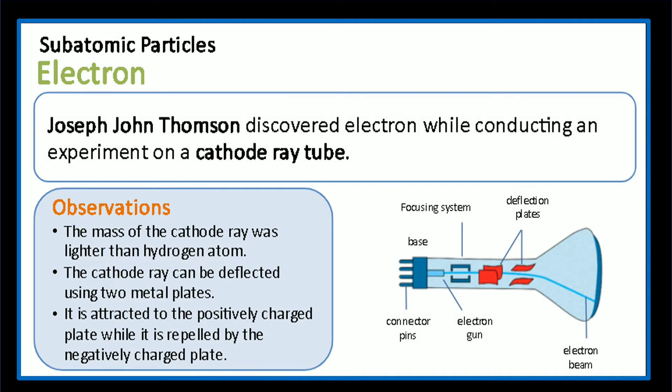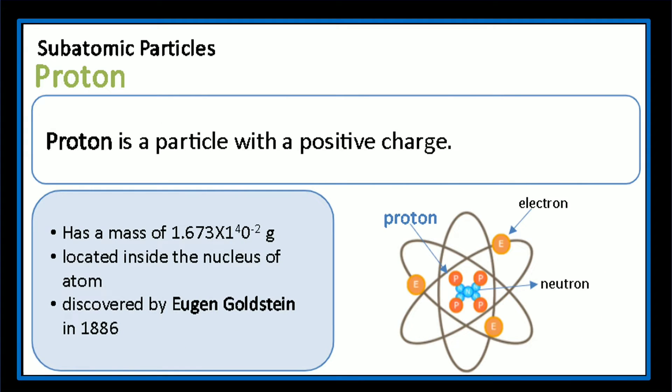On the other hand, the proton is a particle with a positive charge. It has a mass of 1.673 times 10 raised to negative 24 grams, which is greater than the electron's mass.